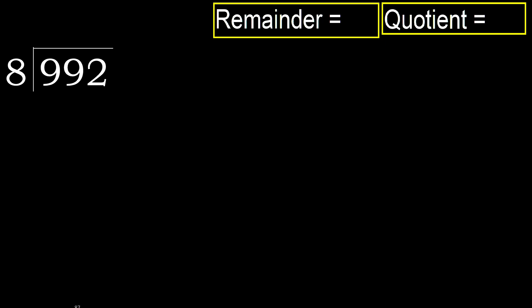992 divided by 8. 9 is not less, therefore with 9 — 8 multiplied by which number is nearest to 9 but not greater?